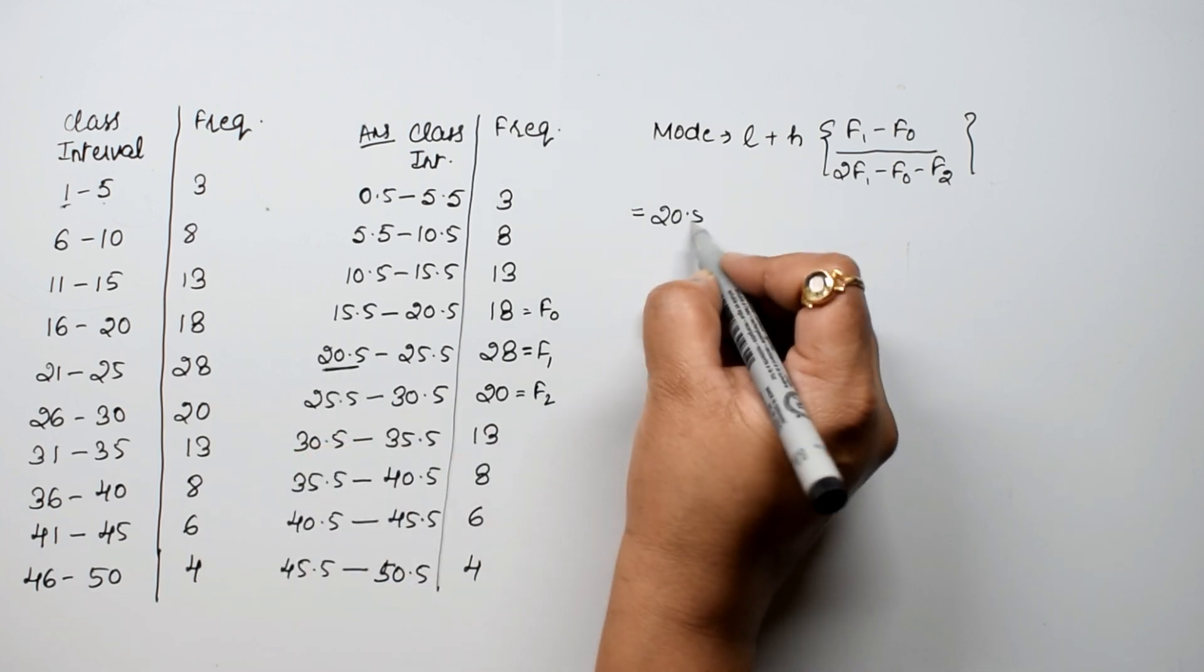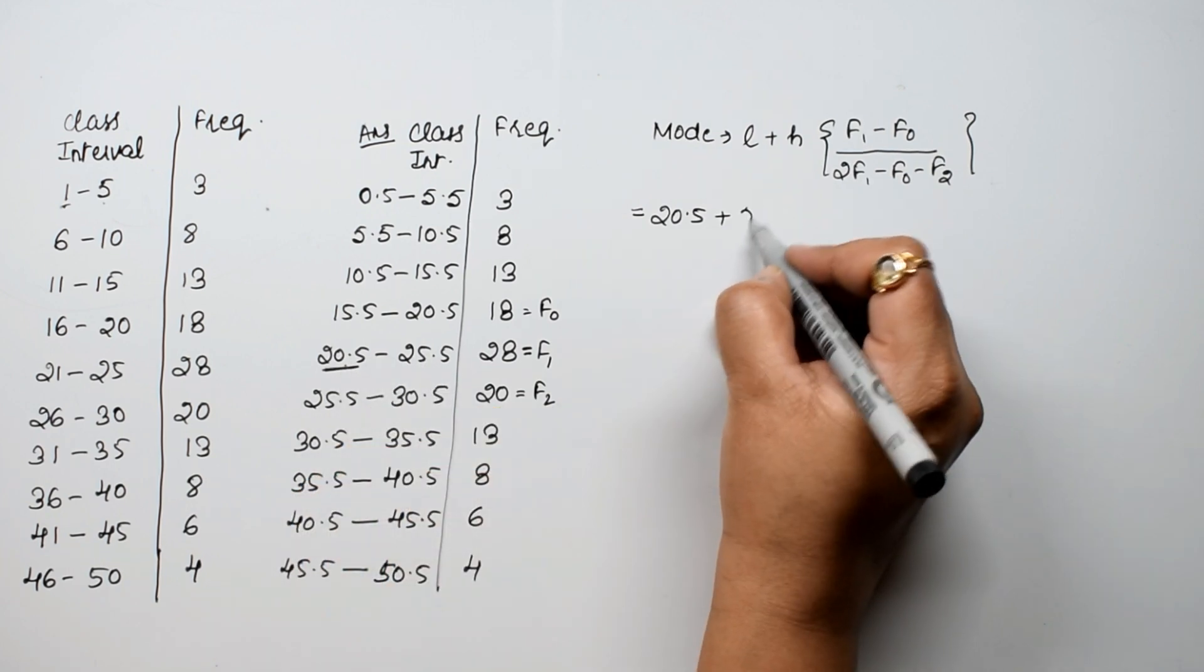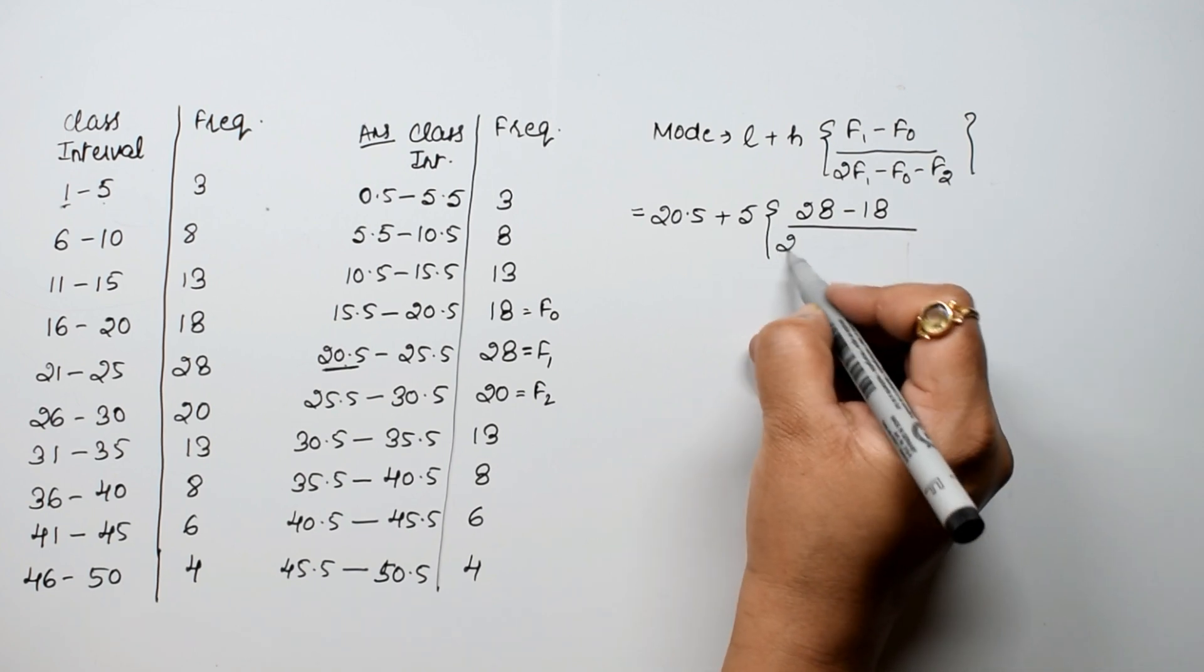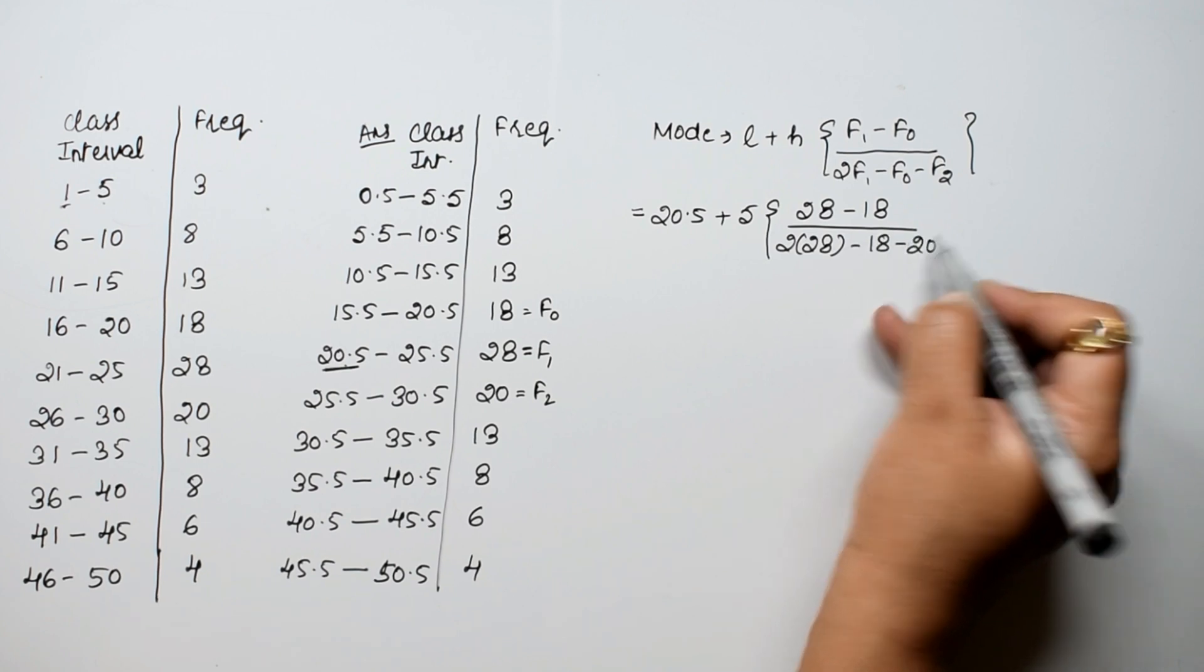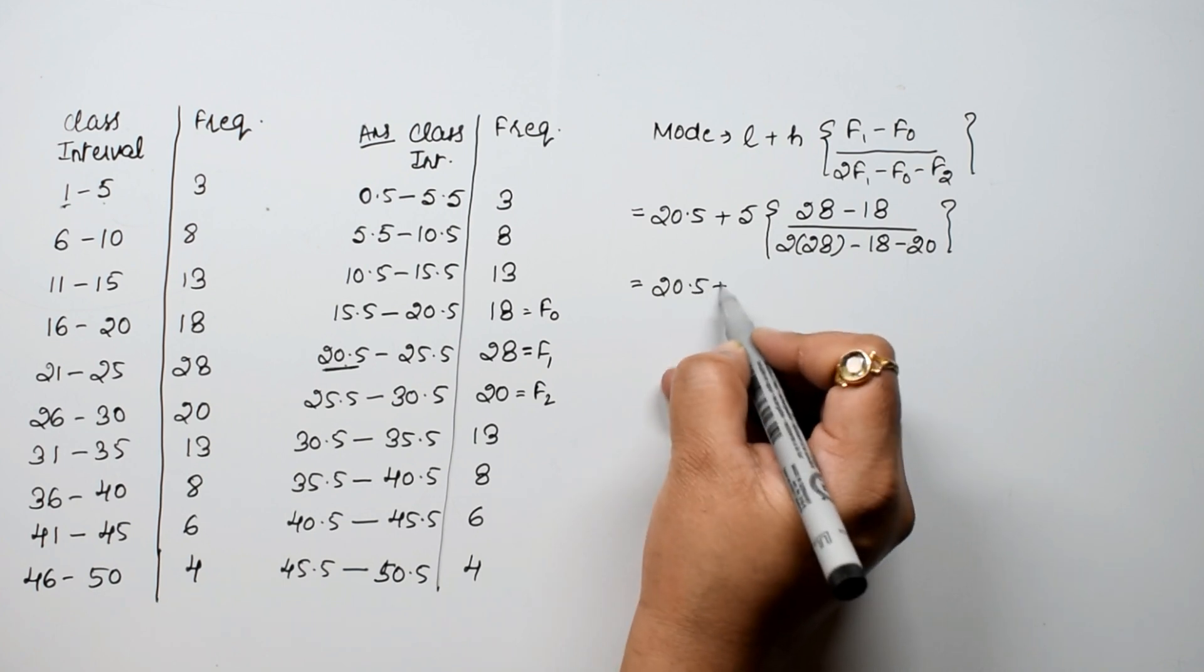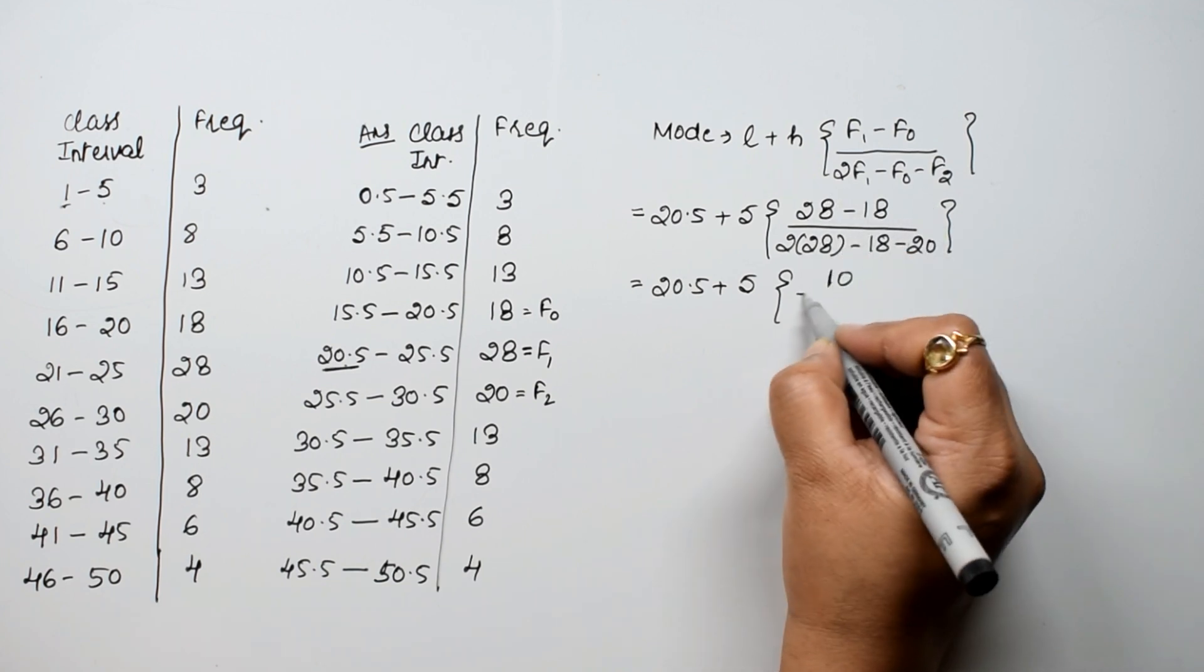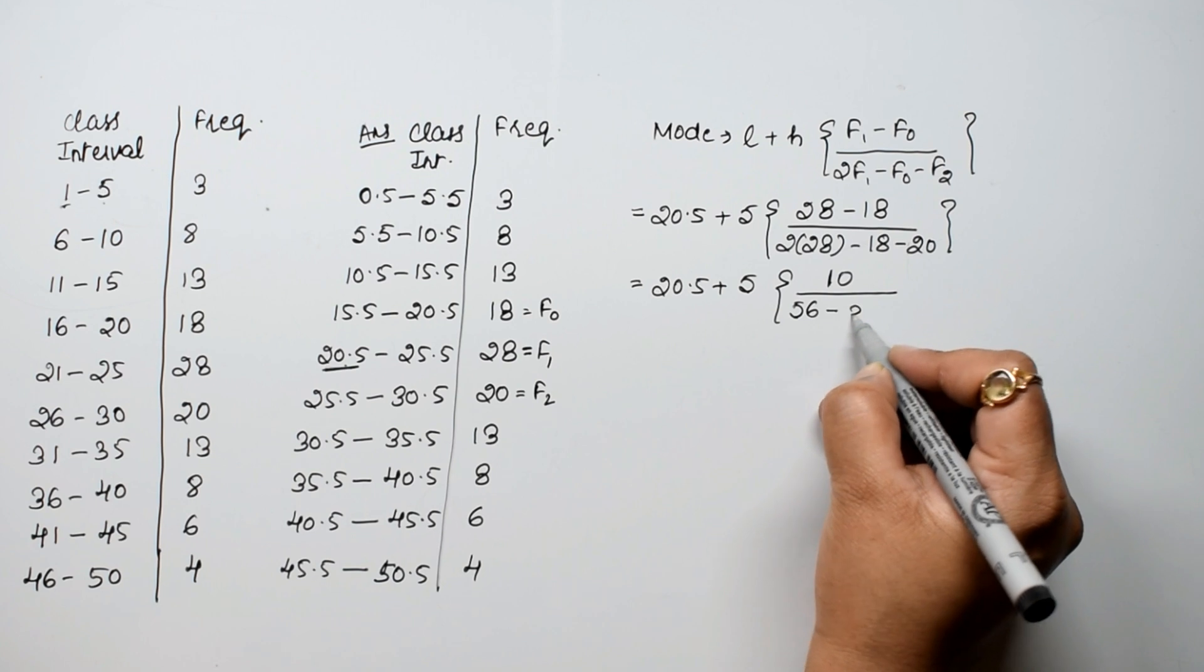So we have 20.5 plus h, where h is the difference between the boundaries, that is 5. So 20.5 plus 5 into 28 minus 18 upon 2 into 28 minus 18 minus 20, which gives us 20.5 plus 5 into 10 upon 56 minus 38.